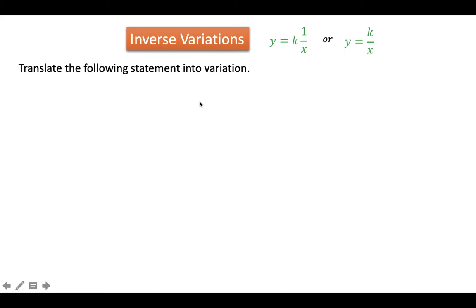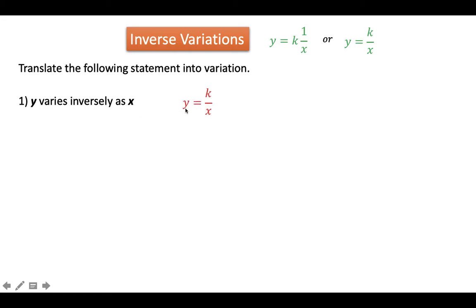Let's start this lesson by translating a verbal sentence into a mathematical sentence. Given y varies adversely as x, it is translated as y is equal to k over x. So y and x are the two quantities, and k is the constant. For number 2, m varies indirectly as n, so that is translated as m is equal to k over n. We will always get the inverse or the reciprocal of the second quantity.